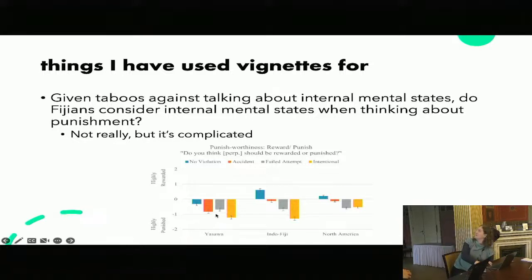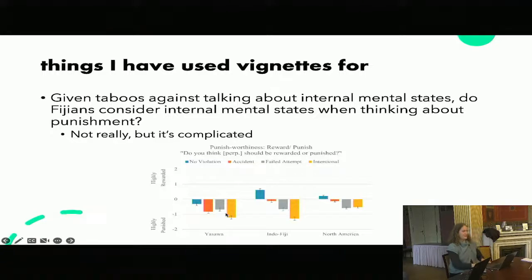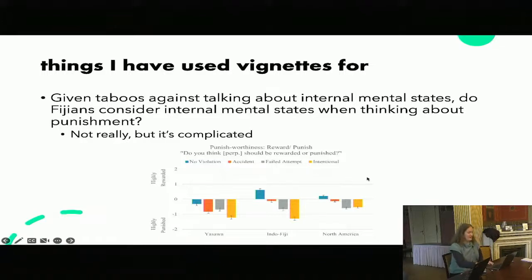The interesting variables here: these are the Fijians, this is a group of Indo-Fijians, and this is North Americans. What we're interested in is the accidental condition. Fijians see that accidental harm is quite punish-worthy — much more so than Indo-Fijians or North Americans. But they also see people who want to harm someone but fail as punish-worthy, which suggests that even though they're not talking about this, there is some sense in which they do understand that mental states have an impact. It's a nice finding — you get these 'yes, but' answers. It's not that they can't think about mental states, but this taboo does have an impact on how they think about the world and how they behave.